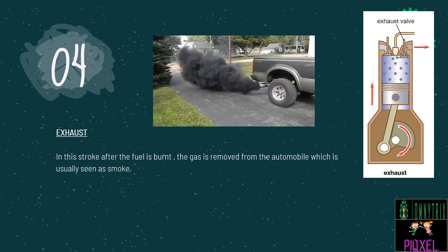Our final stroke is called as exhaust. In this stroke, after the fuel is burnt, the gas is removed from the automobile, which is usually seen as smoke. Whatever gas or fuel is left unburnt in the power or combustion stroke is let out through this smoke. As you can see in this picture, there is an exhaust valve at the top right corner, and that is the valve through which the smoke is going out. You can also see a picture where an automobile or car is letting out smoke.